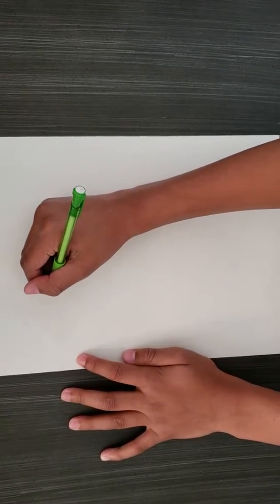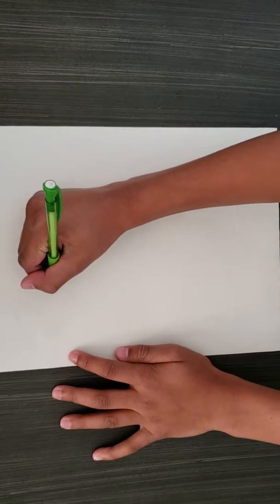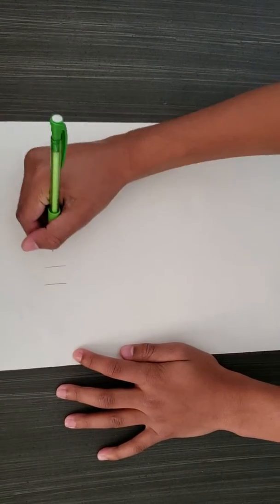Hello everybody, my name is Hunter and today I'm going to show you how to draw a Super S. So the first thing you're going to do is draw three lines.